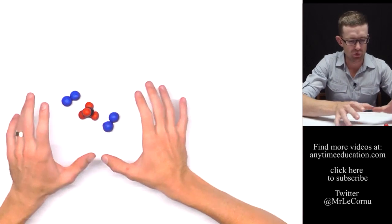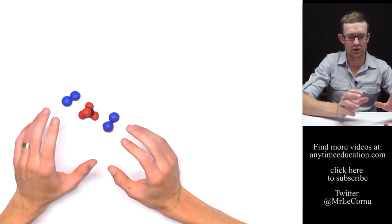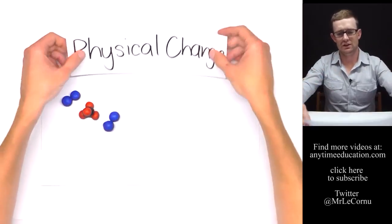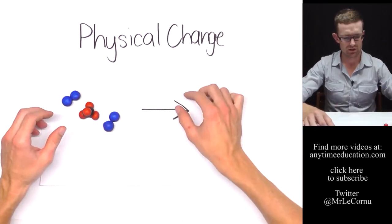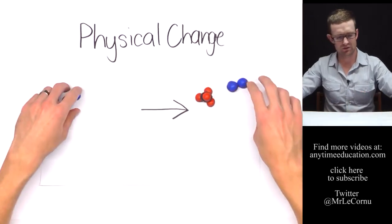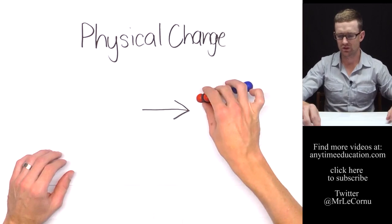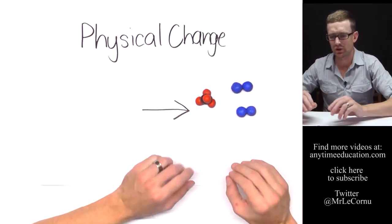Now let's say these molecules form a substance, and this substance is going to go through a change. In a physical change, the molecules are just rearranged so that the appearance of the substance is different. So if we rearrange those molecules and have them like that, we haven't changed the molecules at all.